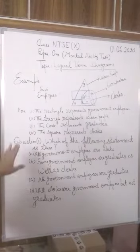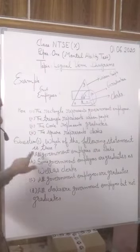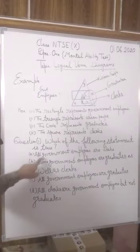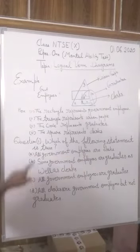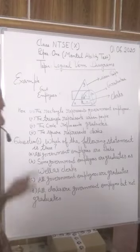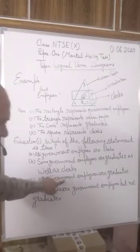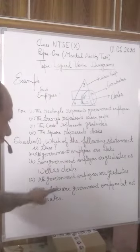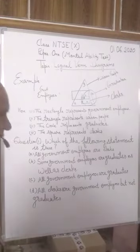Now our first question is: which of the following statements is true? The options are: A — all government employees are clerks; B — some government employees are graduates as well as clerks; C — all government employees are graduates; and D — all clerks are government employees but not graduates.